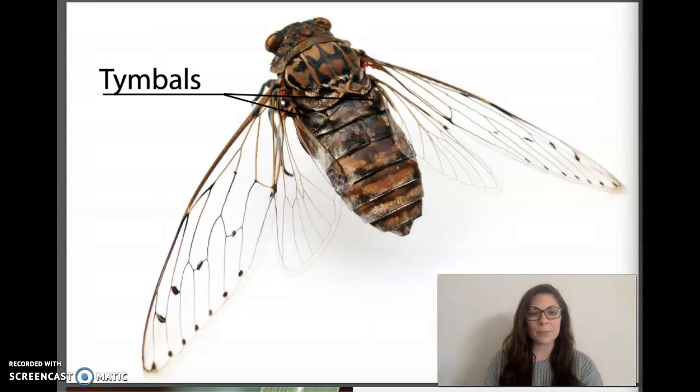The timbals pop and click as they move in and out. Their sound is amplified or made louder inside the mostly hollow abdomen, acting like a drum and creating a loud buzzing song. The shrill sound of hundreds or thousands of cicadas singing together on a warm summer evening may be very, very loud.